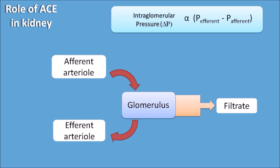The intraglomerular pressure equals the pressure difference between the efferent and afferent arterioles. The glomerular filtration rate (GFR) depends on this intraglomerular pressure — as intraglomerular pressure increases, GFR increases. For an effective GFR, the afferent arterioles should be dilated and the efferent arterioles should be constricted, which increases intraglomerular pressure and thus the glomerular filtration rate.